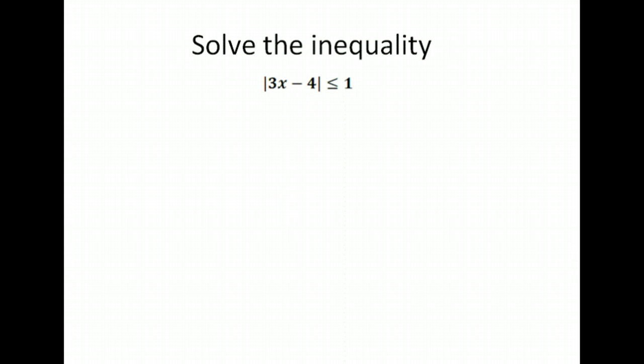Next problem. Absolute value of 3x minus 4 is less than or equal to 1. This is not an or. It's not more. It's less than. Less than is an and. More is an or. If it's less than, our instructions were to put it in between the positive and the negative case. You can also do those separately and write the word and. But then you just have to remember to join them back together when you get to the end.